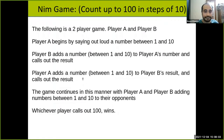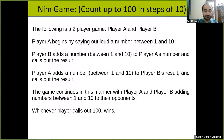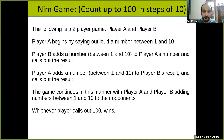Mrunal, which number would you like to say? Twenty. So I'm saying thirty. Mrunal's turn — forty-eight. I will say fifty-eight. Mrunal says fifty-seven. I will add ten and say sixty-seven. Can people try to guess who will win?